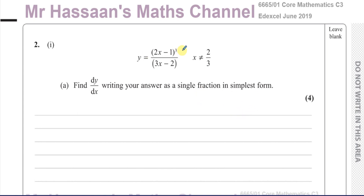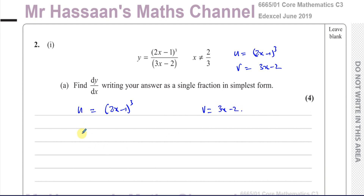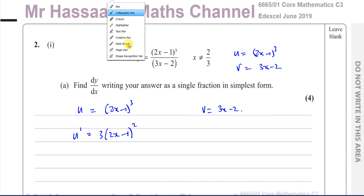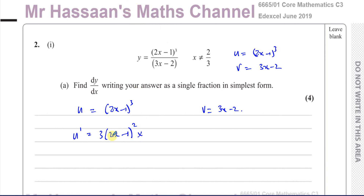What you do is call the numerator u and the denominator v. So u = (2x − 1)³ and v = (3x − 2). Underneath u, write the differential of u using the chain rule: multiply by the power, keep everything inside the same, reduce the power by 1, and multiply by the differential of what's inside, which is 2. That gives us u' = 6(2x − 1)². The differential of v, v', is 3.